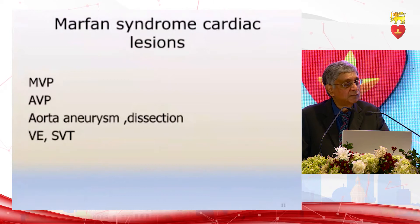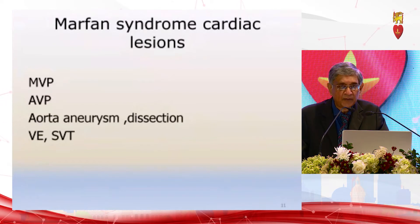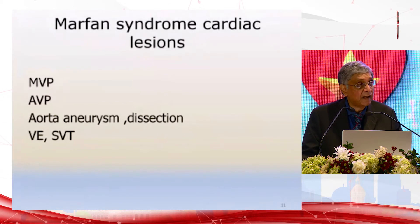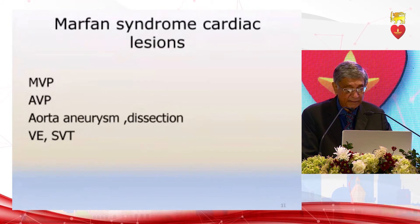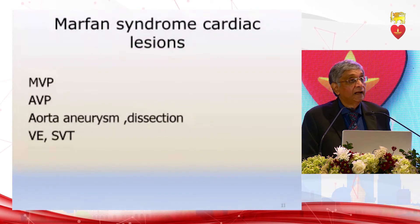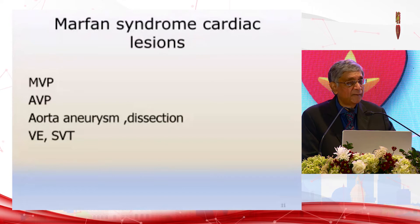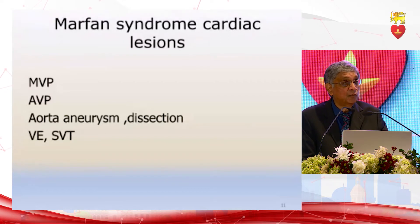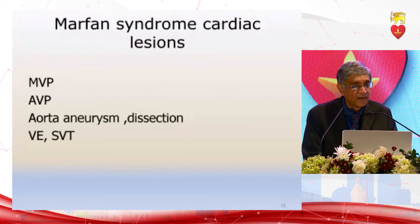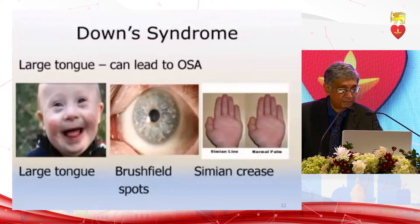Marfan syndrome is associated with mitral prolapse, aortic prolapse, aortic aneurysm and aortic dissection, ventricular ectopics, and supraventricular tachycardia. Therefore Marfan syndrome is an important syndrome to look for. If you look at the body build you may suspect it, and you can find that several famous people, even Olympic athletes, have been diagnosed with Marfan syndrome — so it is not a rare condition at all.